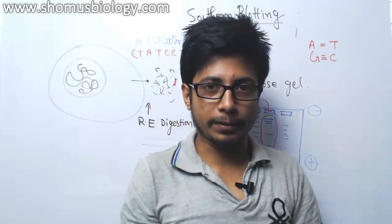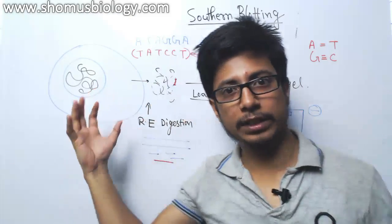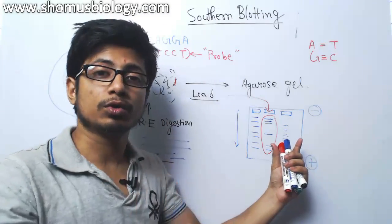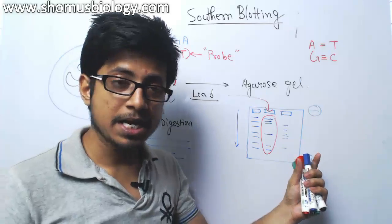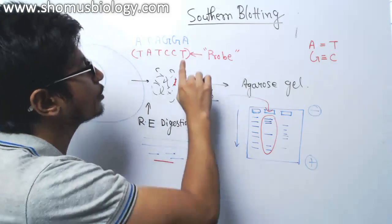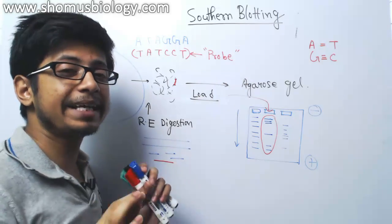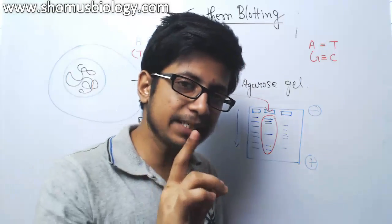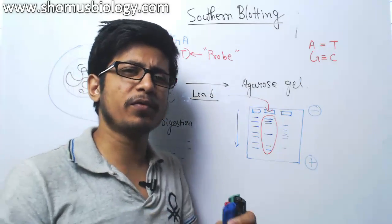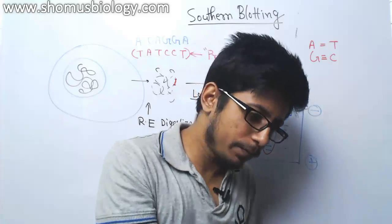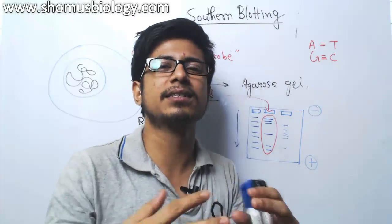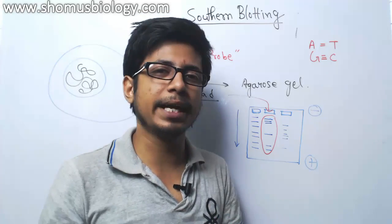For any Southern blotting: start with extraction of the DNA, then restriction digestion, then load them in gel and go through gel electrophoresis. Once the DNA are separated, we will do the probing or nucleic acid hybridization. But there is a problem — this gel is much more fragile. Even if you try to pick the gel up with a spatula or your hands, it sometimes breaks because it is not that strong.